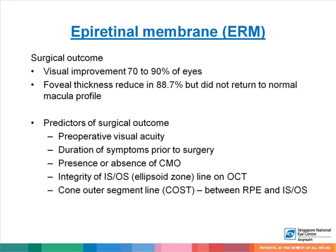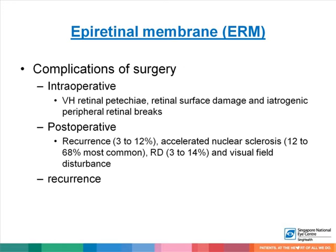Vision generally improves in about 90% of eyes, with foveal thickness reducing in 88.7%, though the macula usually does not return to a normal contour. Predictors of surgical outcome include pre-operative visual acuity, duration of symptoms before surgery, presence or absence of cystoid macular edema, integrity of the ellipsoid zone line on OCT, and the cone outer segment line between the RPE and the ellipsoid zone. Intraoperative complications include vitreous hemorrhage, retinal bleeding on the retinal surface, or iatrogenic peripheral retinal breaks.